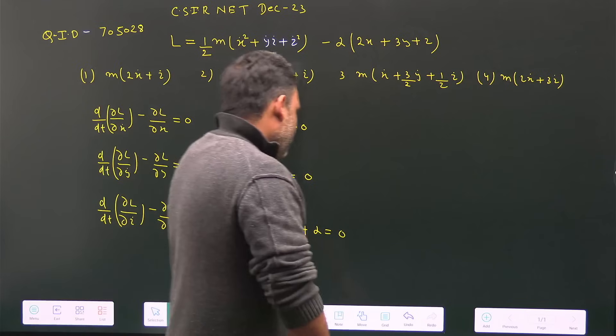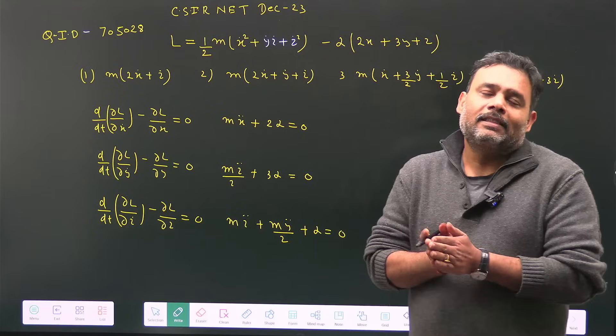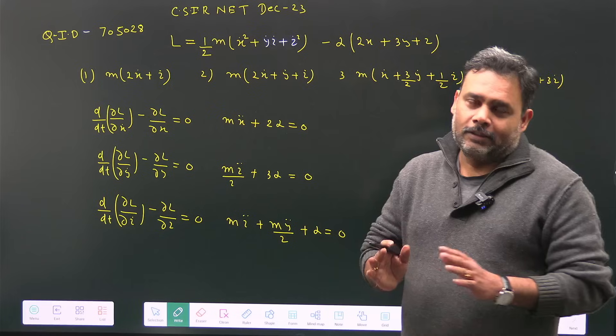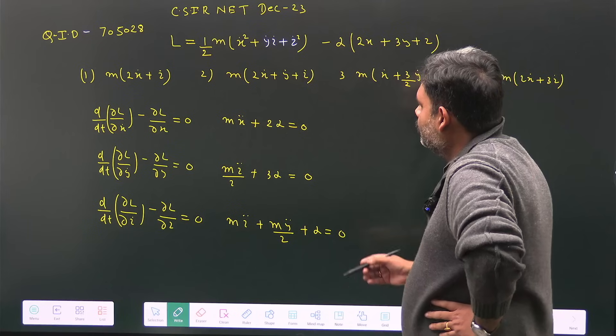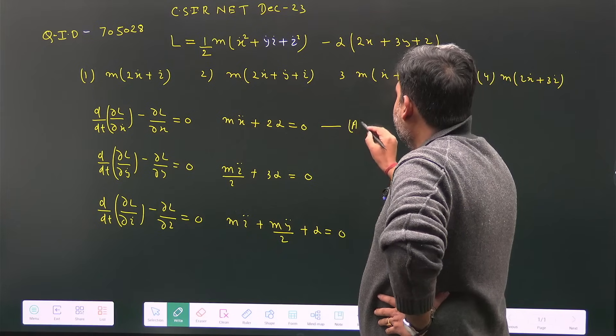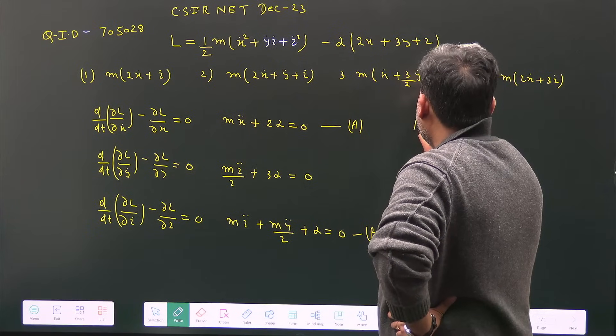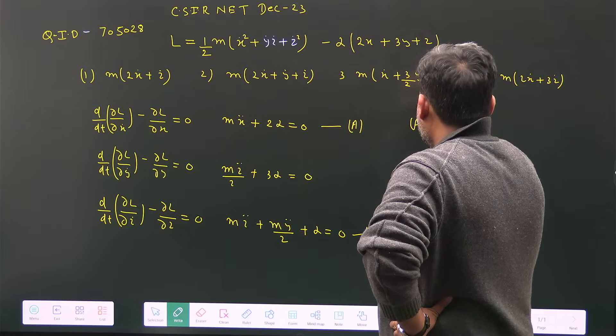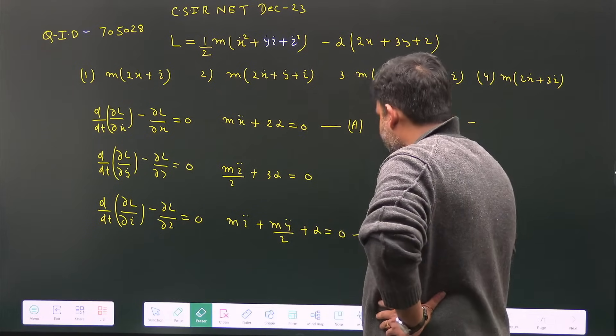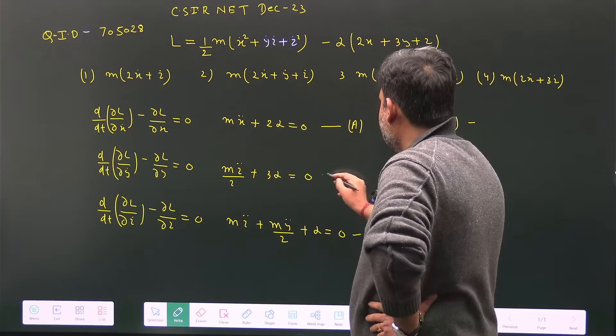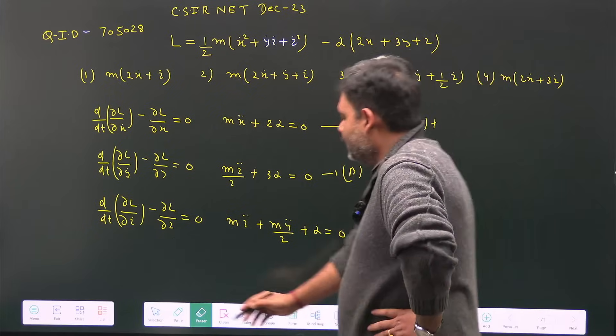Now, constant of motion means d/dt of that particular thing must be equal to zero. Let me label these equations: this is equation (a), this is equation (b), and this is equation (c). I'm going to use a trick.